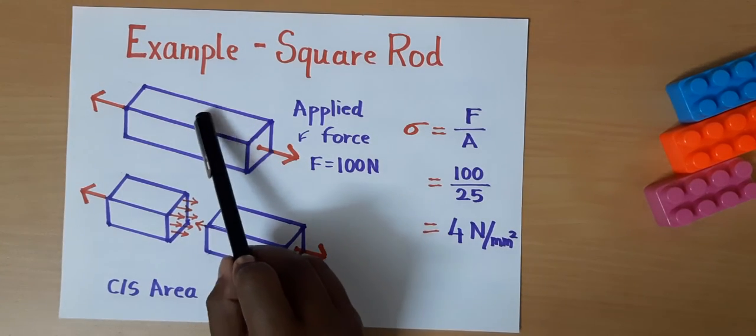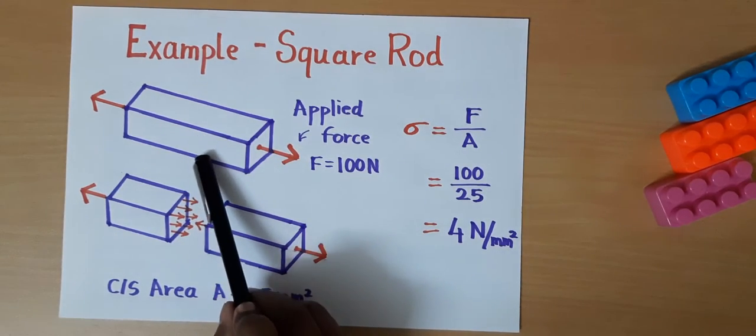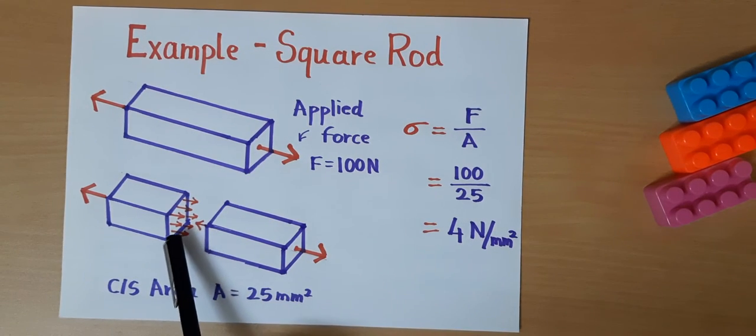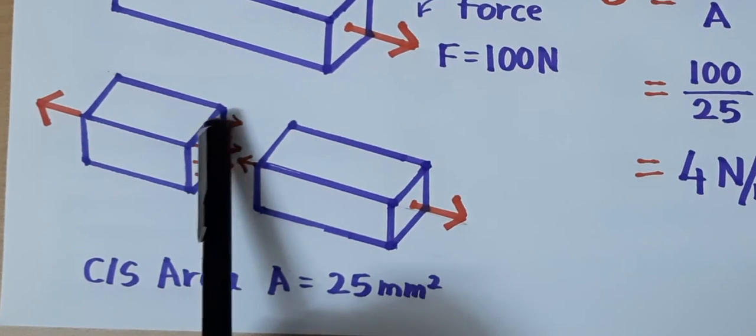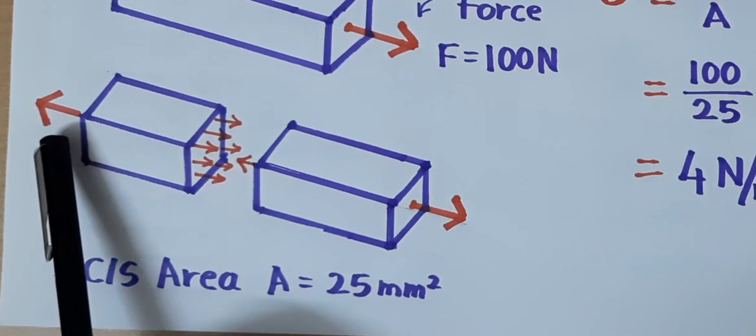Let's take a cross section at the middle of this square rod. When you take a cross section, what you can see? There is an internal force generated due to this external load, generated at each molecule.